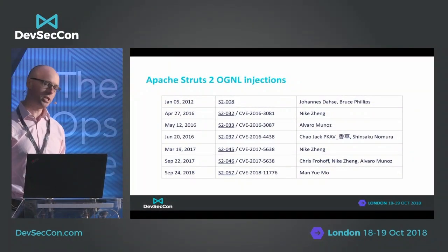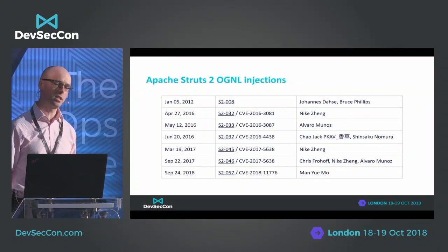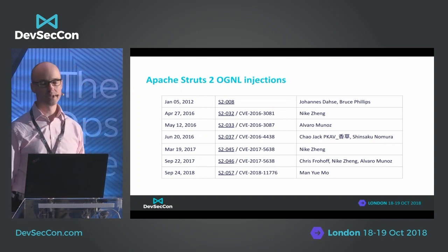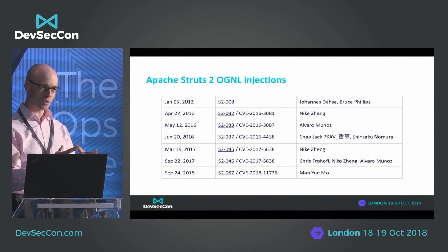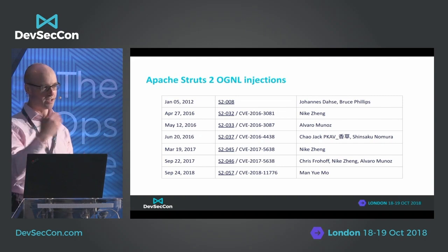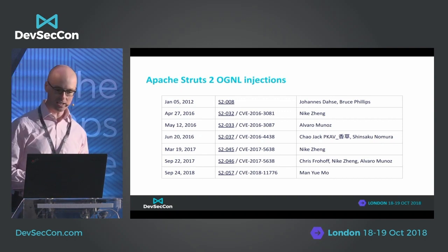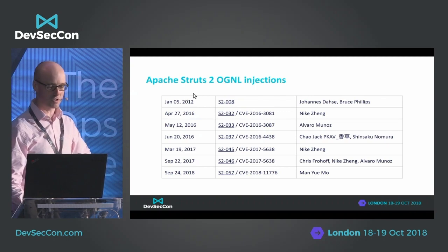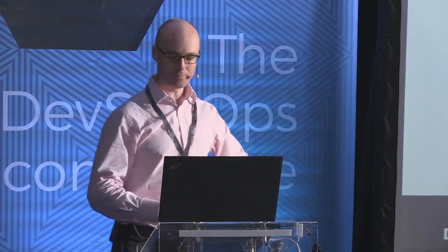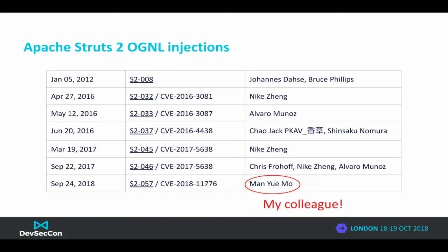Here's another similar example: Apache Struts OGNL injection. OGNL is a scripting language used in Apache Struts, intended for internal scripting processes — not intended for someone to connect over the internet and run their own OGNL. But that's exactly what's happened in all of these cases. You can see these bugs go back to 2012, probably around when Struts 2 was introduced and OGNL was added. I think ever since that point, these vulnerabilities have been happening. The most recent was just a few months ago, found by Mo, who actually sits next to me at work. To show how serious this is, I'm going to quickly show you a demo.